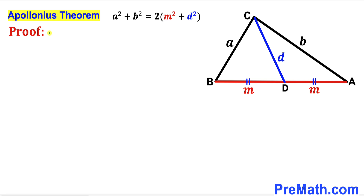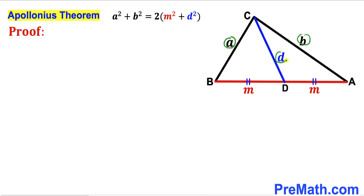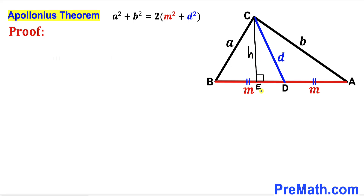In this next step I will show you the proof of the Apollonius theorem — that a² + b² = 2(m² + d²) — for triangle ABC whose side lengths are a, b, median d, and segments BD and AD equal to m each. I have dropped perpendicular CE onto side AB, labeling it as height h, and labeling segment ED as x.